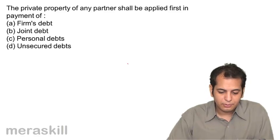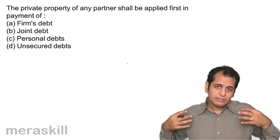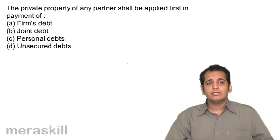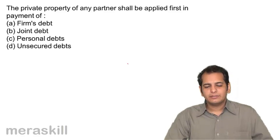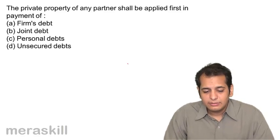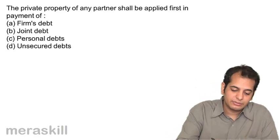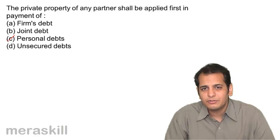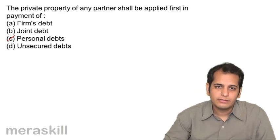The private property of any partner shall be applied first in the payment of firm's debt, joint debt, personal debts, or unsecured debt. When a partner brings in additional capital because the firm's funds are deficient, this amount is to be first applied in payment of his personal debts — not the firm's debts. Any loan given to the firm or amount payable to the partner is paid through this additional amount.